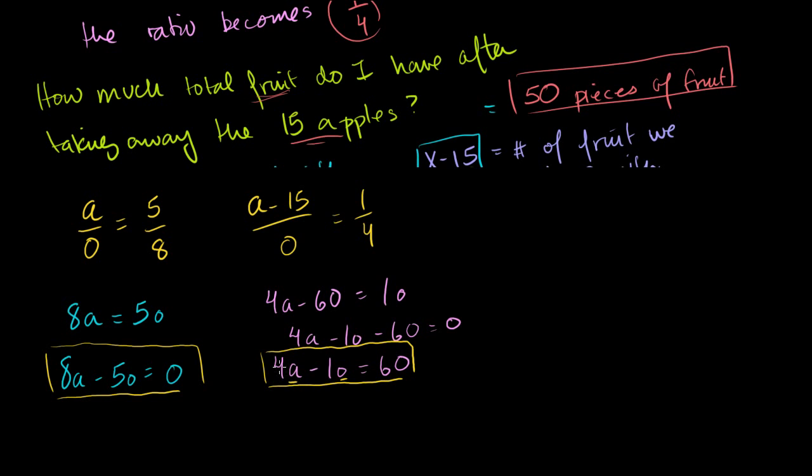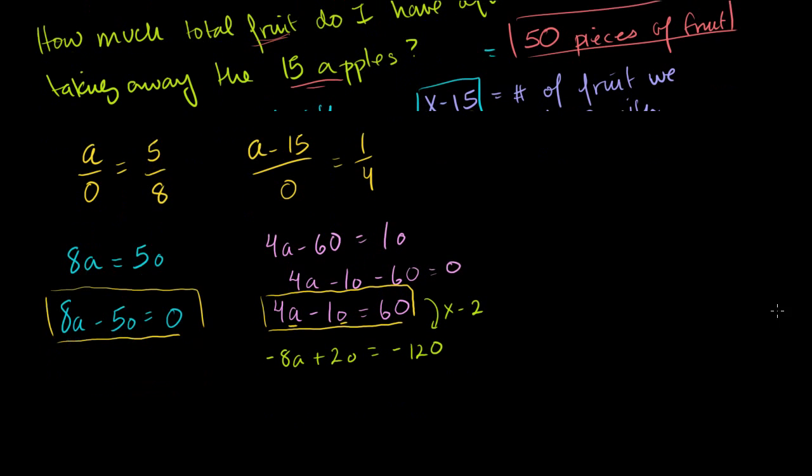Let's multiply this equation times minus 2. So it becomes minus 8A plus 2O is equal to minus 120. I just multiplied this equation right here times minus 2. If I do that, and then if I add it to this equation right here, this equation is 8A minus 5O is equal to 0. What do I get? Let's just add these two equations.